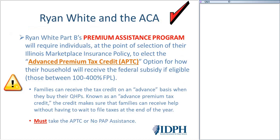We are emphasizing again the Advanced Premium Tax Credit requirement. Any individual eligible for subsidies must take them in an Advanced Premium Tax Credit format. There are no options. If they do not take it, they are not eligible for PAP.